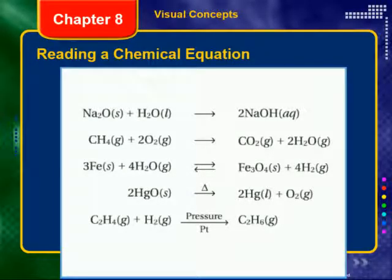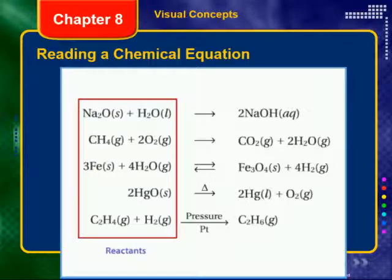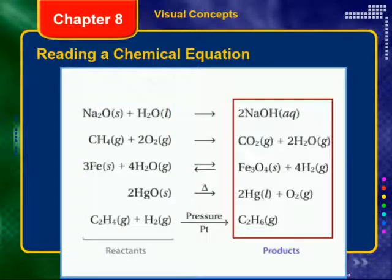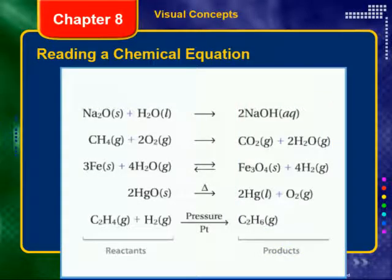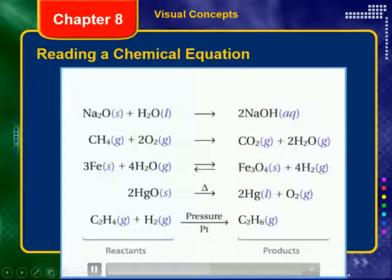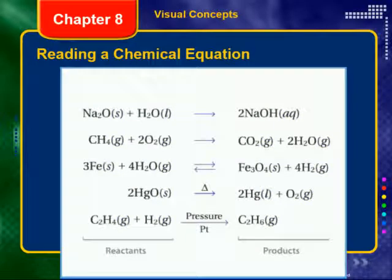Chemical equations use symbols to describe chemical reactions. The materials undergoing the reaction are the reactants; those created by the reaction are the products. Individual atoms and molecules are separated by plus signs. The relative amount of each reactant or product is shown in front of its symbol as a coefficient. Symbols in parentheses after the reactant or product show its physical state: solid, liquid, or gas. AQ stands for aqueous, meaning the substance is dissolved in water. Products and reactants are separated by an arrow indicating the direction of the reaction.